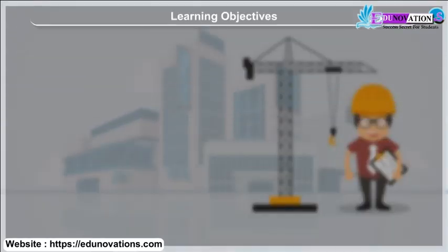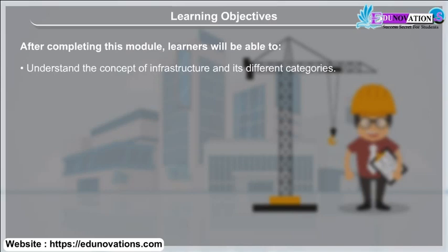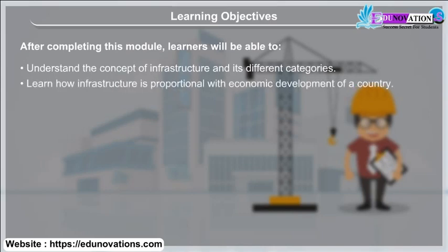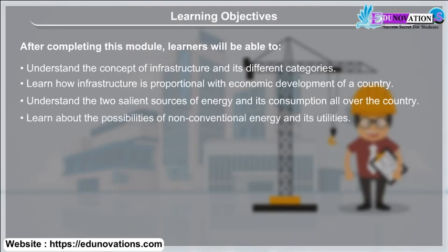Learning Objectives: After completing this module, learners will be able to understand the concept of infrastructure and its different categories, learn how infrastructure is proportional with economic development of a country, understand the two salient sources of energy and its consumption all over the country, and learn about the possibilities of non-conventional energy and its utilities.